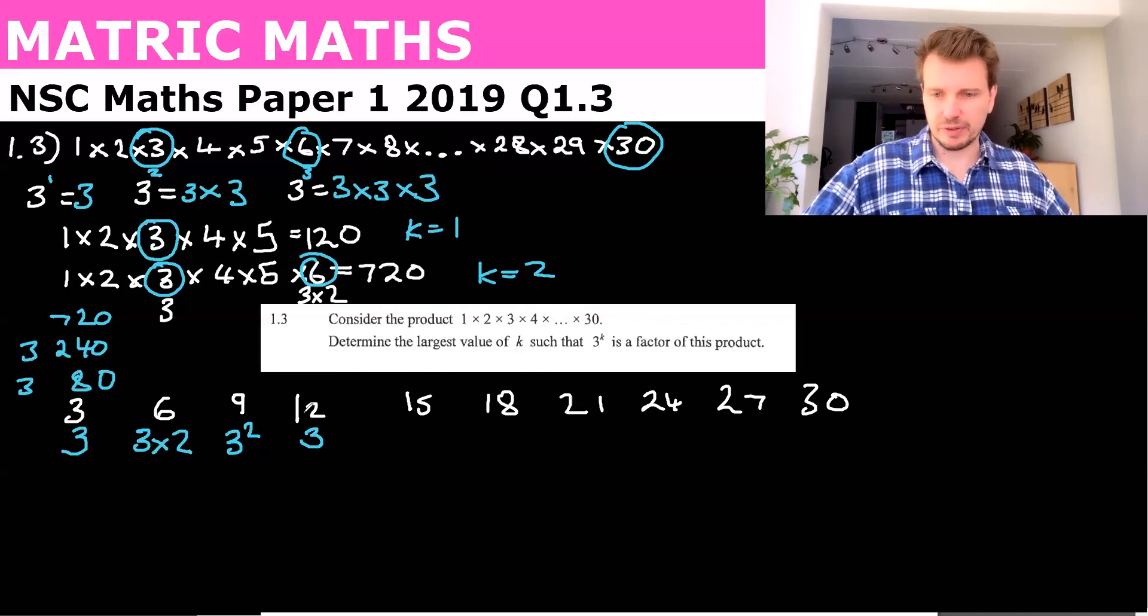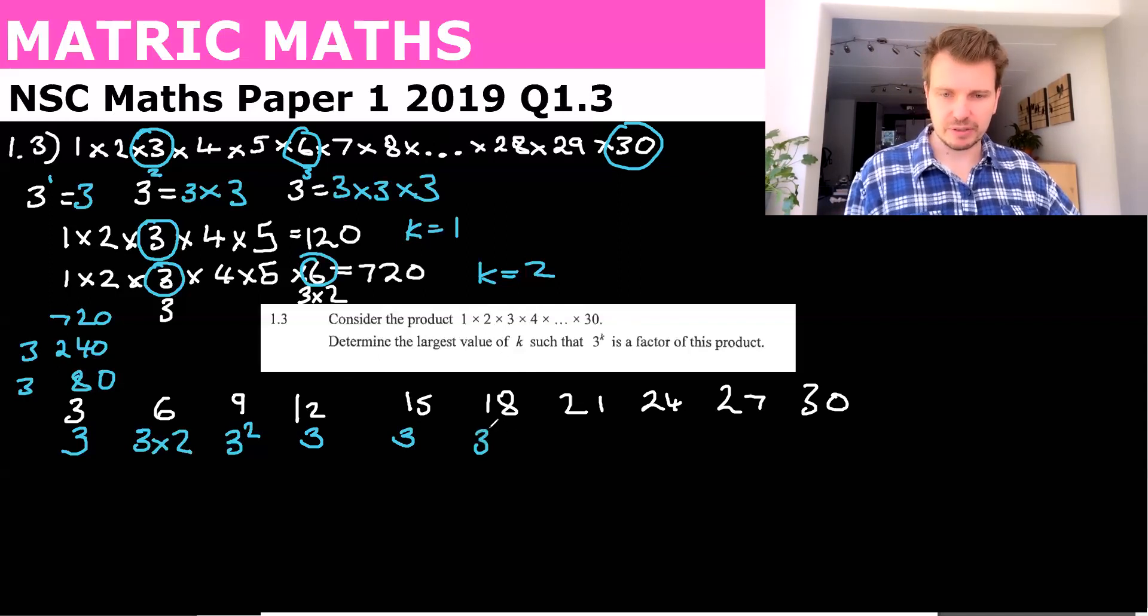So we need to include them. So 12 contains 1 three. 15 contains 1 three, because it's 3 times 5. 18 contains 9, which is 3 squared times 2. So we've got here 3 times 4, 3 times 5. This is 3 squared times 2. 21 is 3 times 7.